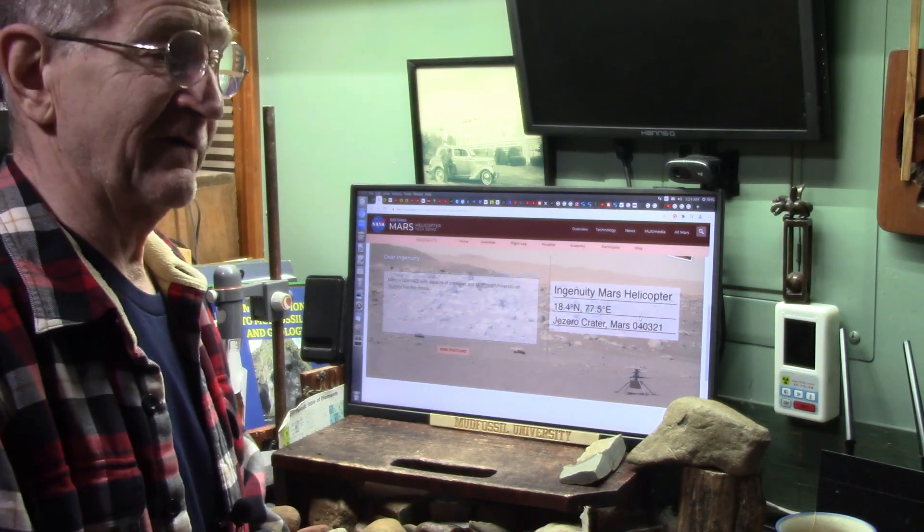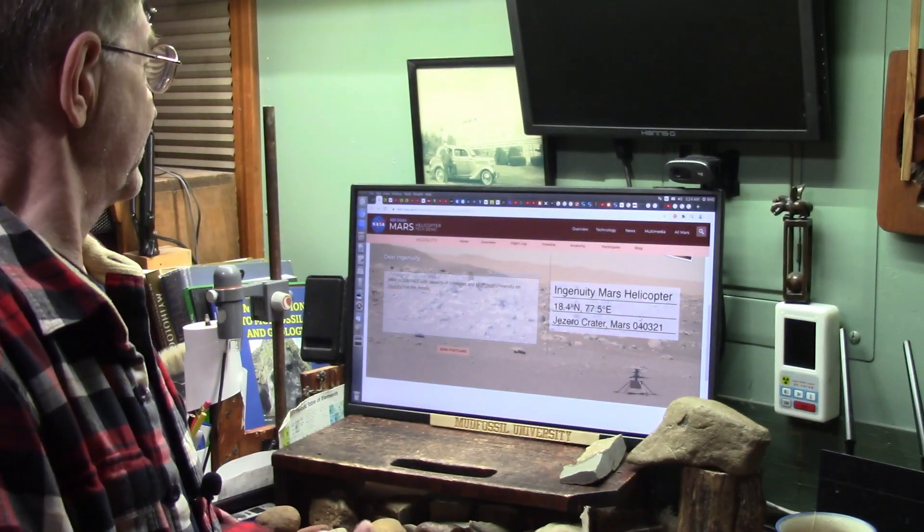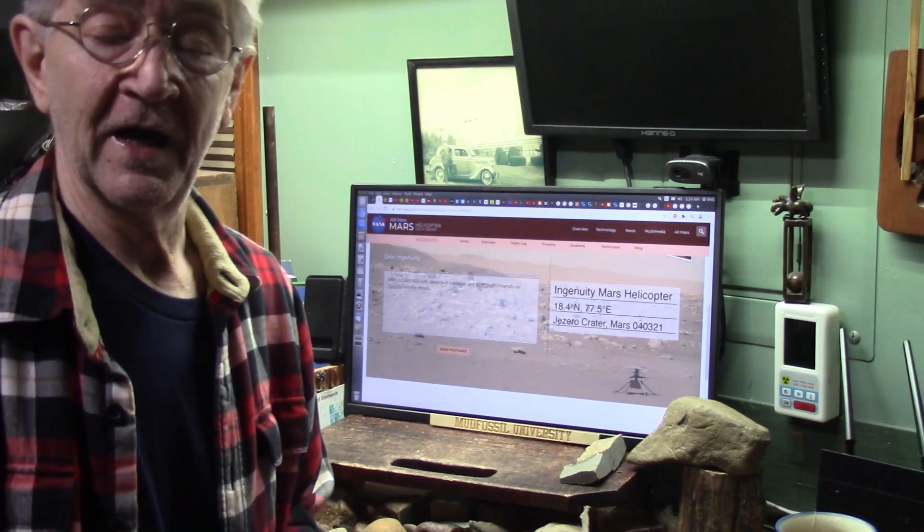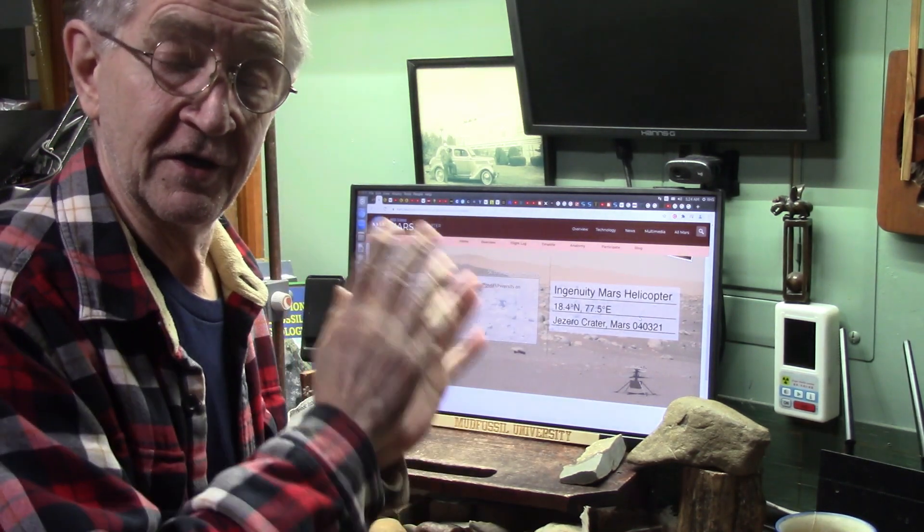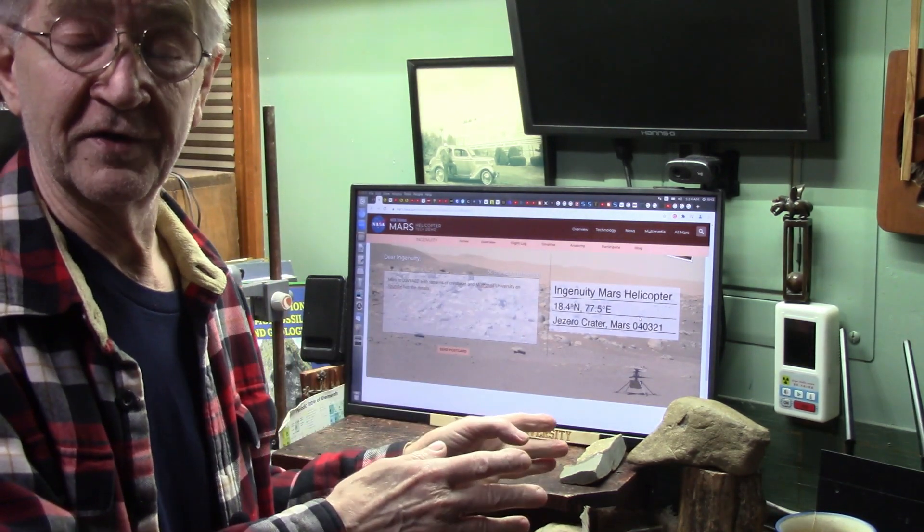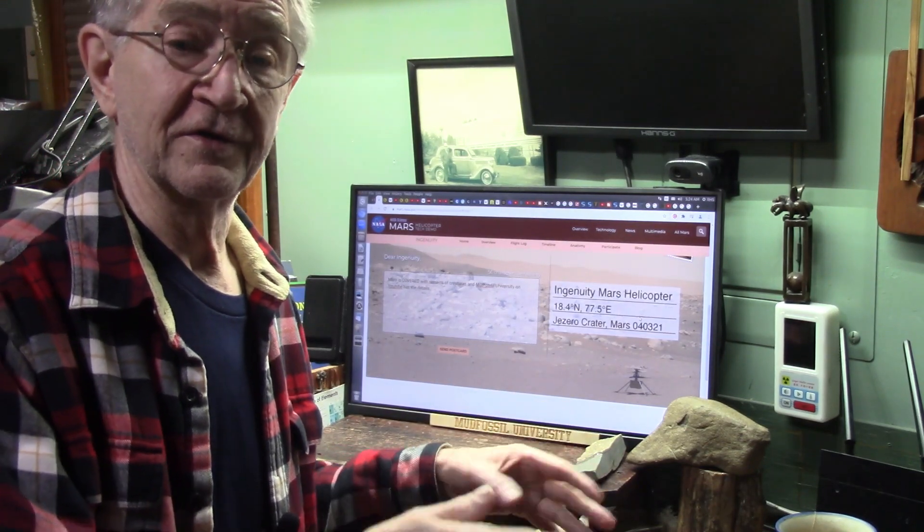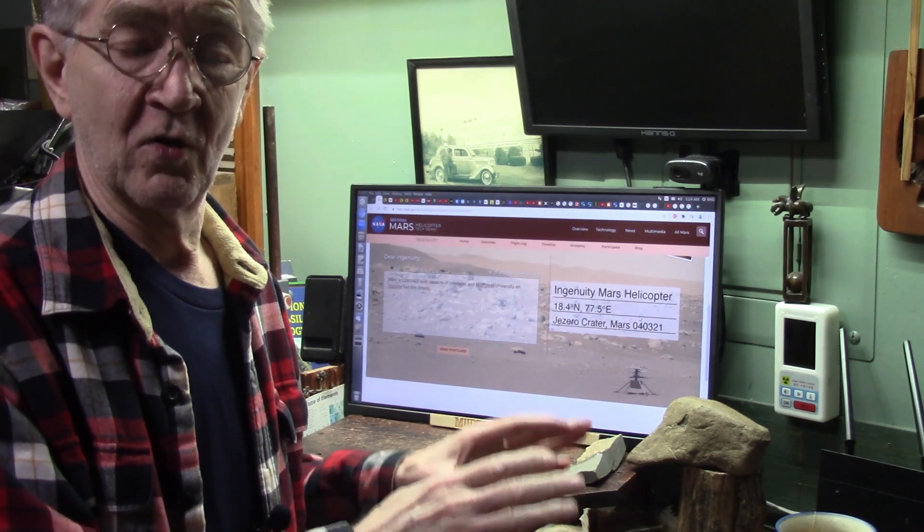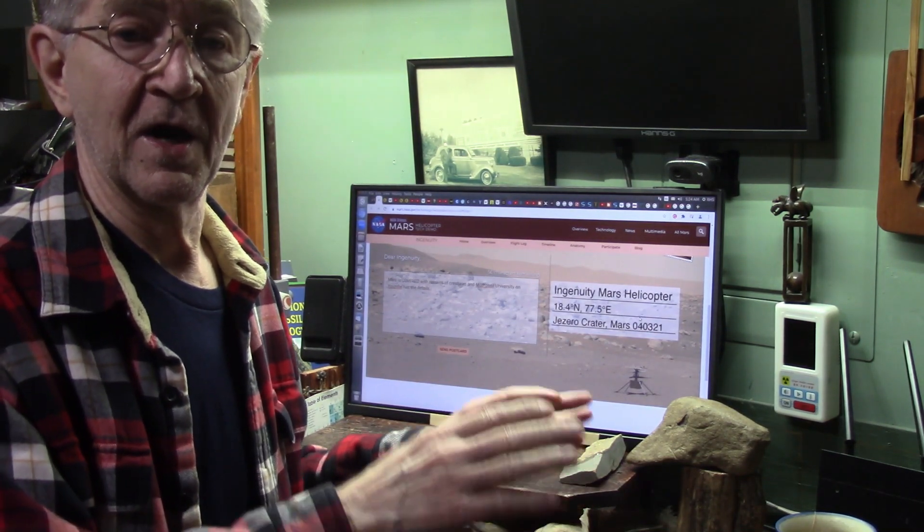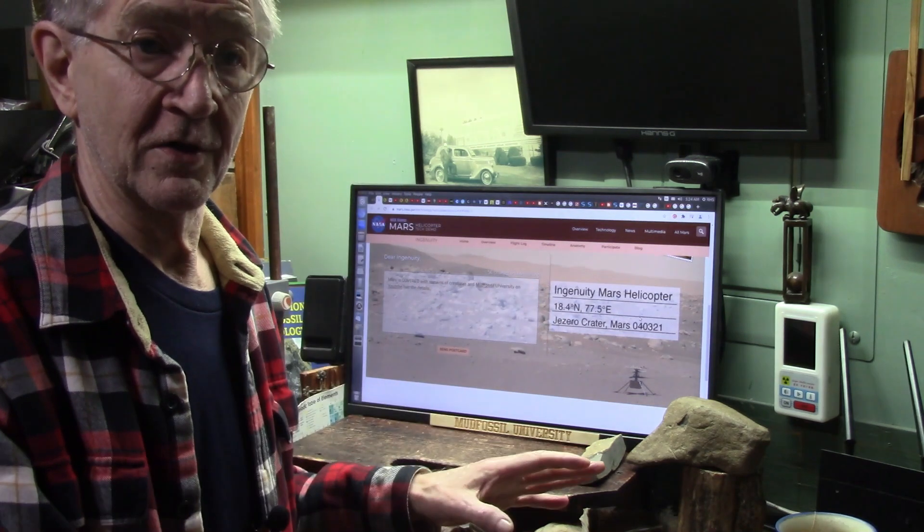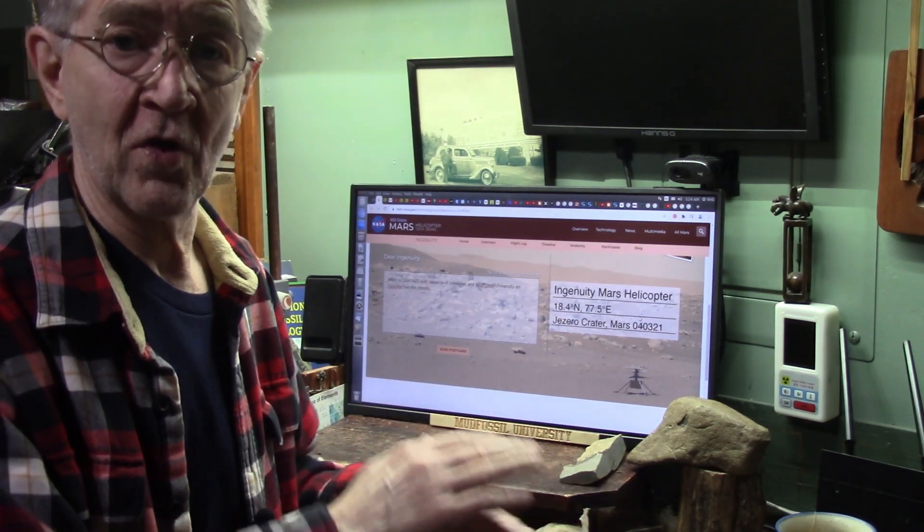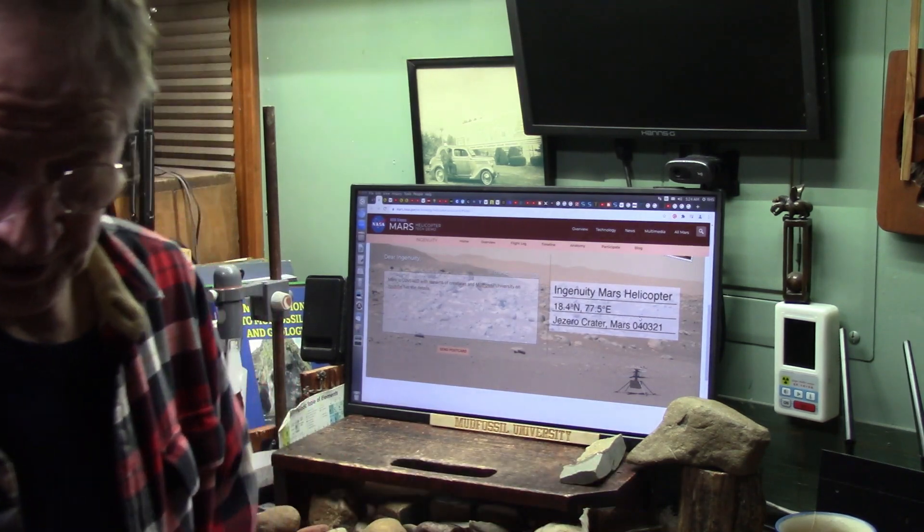Mars is covered with remains of creatures and Mud Fossil University on YouTube has the details. Here's the details that they are missing up on Mars and I've been studying this since 2014 when the Curiosity rover went up there and discovered the Mars crab, the Mars blueberries, the Mars Morse code, all biology. Let's take a look.